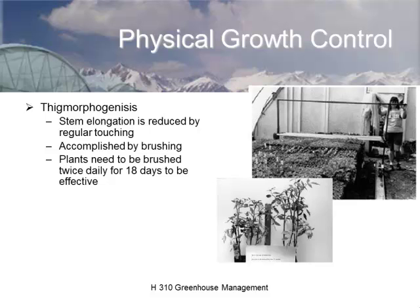Where would brushing be a good tool for a greenhouse grower? Only one chemical PGR can be used on vegetable transplants, and most growers don't want any chemical PGRs on them at all. Brushing is chemical-free. To be effective during production, it needs to be done about twice a day for 18 days in a row, keeping plants shorter and more compact.